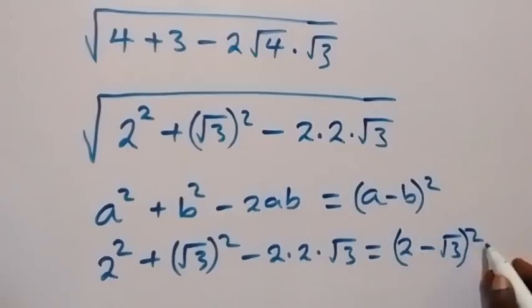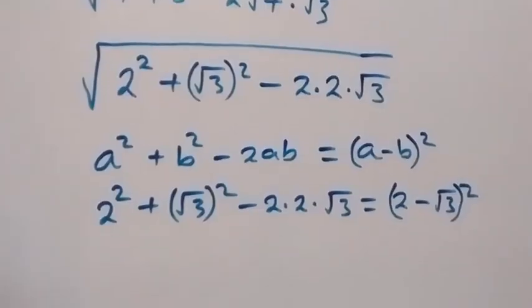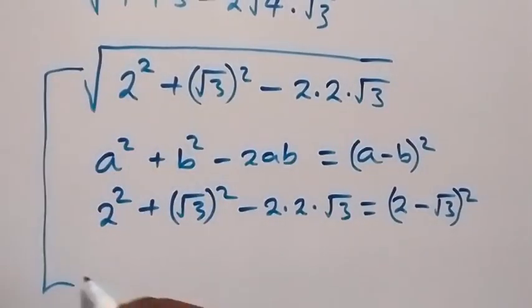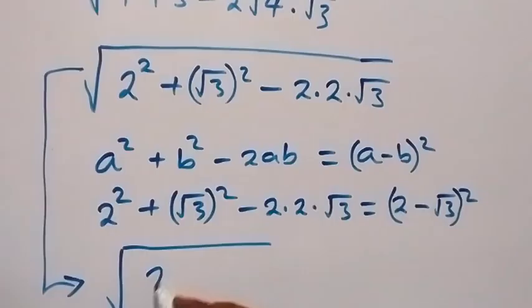So the expansion here will give us this we have here, which implies that what we have here now can be written as square root of 2 minus root 3 all square.